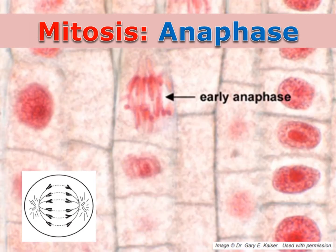Eventually, the sister chromatids get pulled apart into two complete sets of chromosomes that are pulled to different sides of the cell. This is what happens during anaphase.